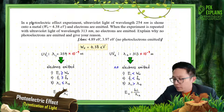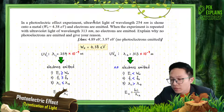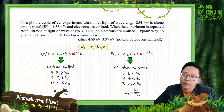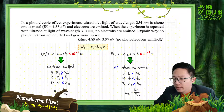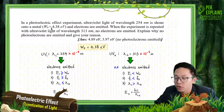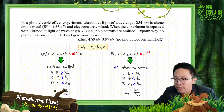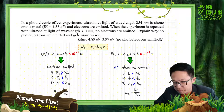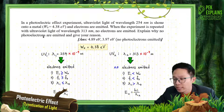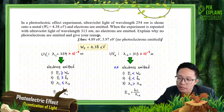In a photoelectric effect experiment, ultraviolet light of wavelength 254 nanometers is shone onto a metal with a work function equal to 4.38 electron volts, and electrons are emitted. When the experiment is repeated with ultraviolet light of wavelength 313 nanometers, which is a higher wavelength, no electrons are emitted. Explain why no photoelectrons are emitted and give your reason.